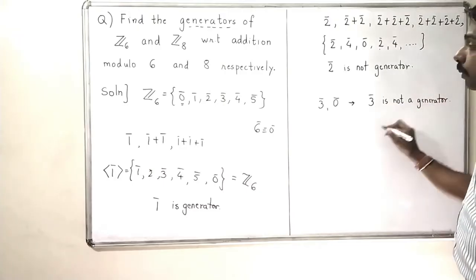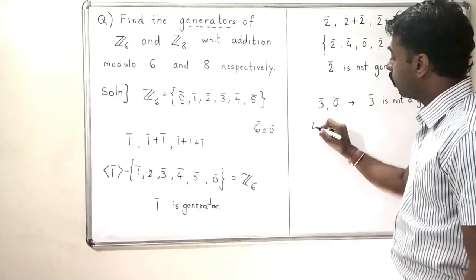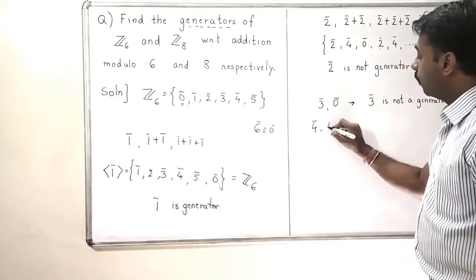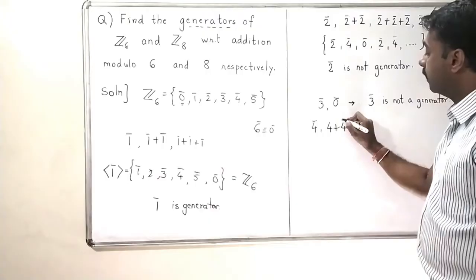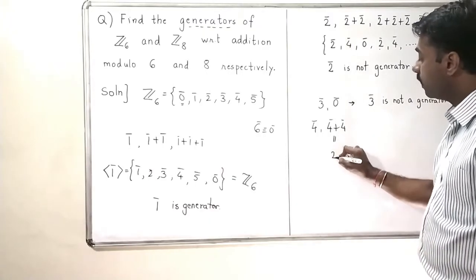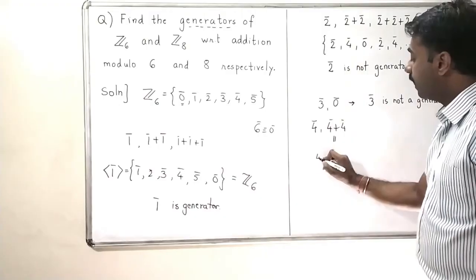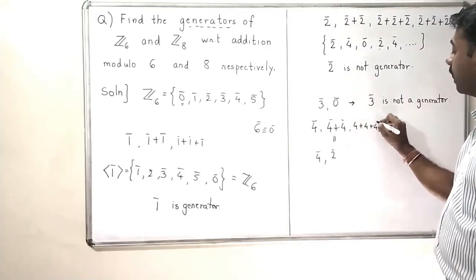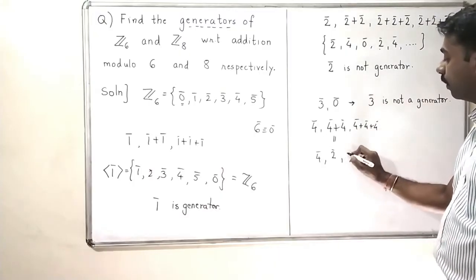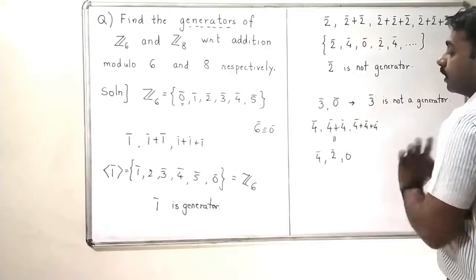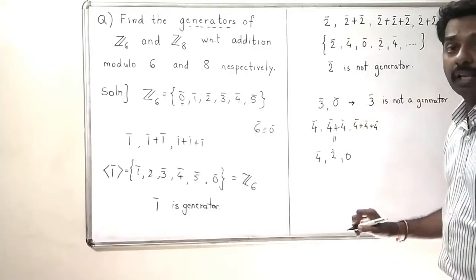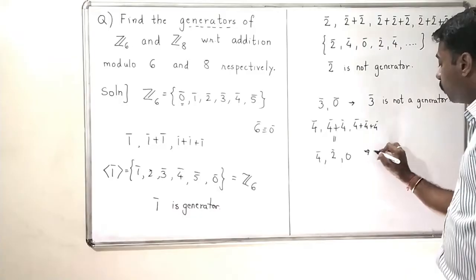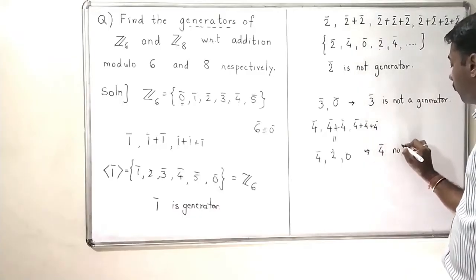For 4 bar: 4 bar once is 4 bar, then 4 bar plus 4 bar is 8 bar which is 2 bar, and 4 bar added three times gives 12 bar which is 0 bar. So 4 bar will also not generate all the elements — it again generates only 4, 2, and 0. So 4 bar is also not a generator.